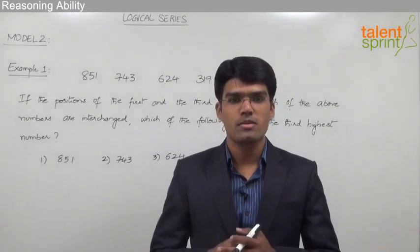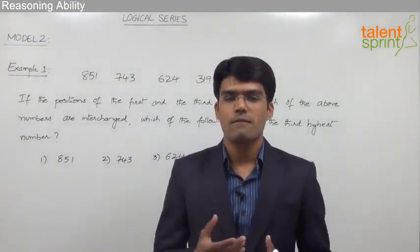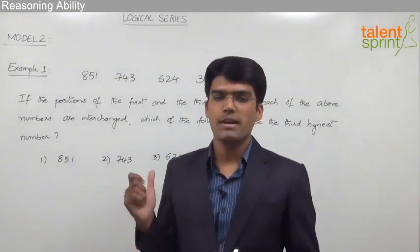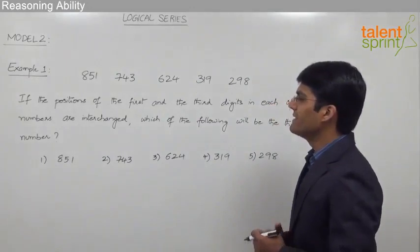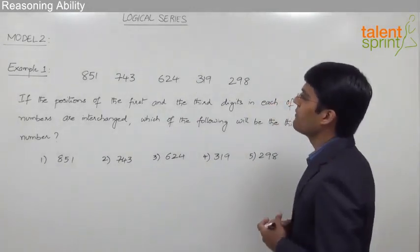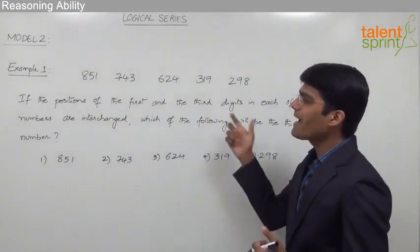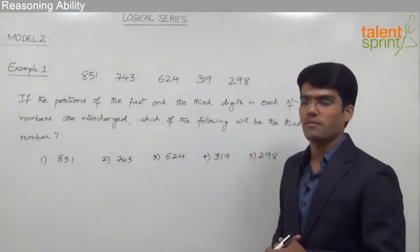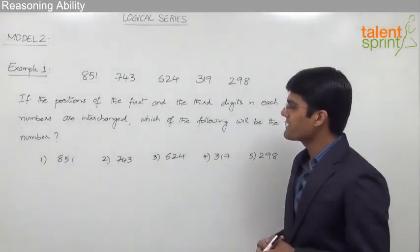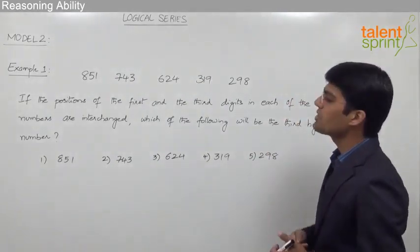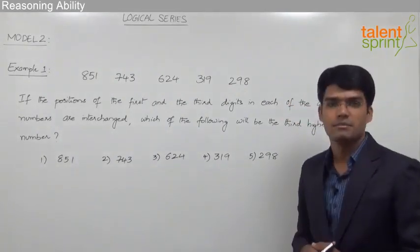Let us now take the second module from logical series where a series of 3-digit numbers are given to us, followed by a question. The numbers given are 851, 743, 624, 319 and 298 — so there are five 3-digit numbers. The question is: if the positions of the first and the third digits in each of the above numbers are interchanged, then which of the following will be the third highest number?